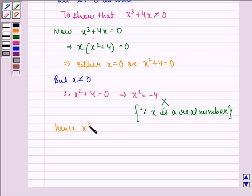Hence X³ plus 4X is not equal to 0 if X is not equal to 0, which is the same as saying that Q is not true implies that P' is not true.